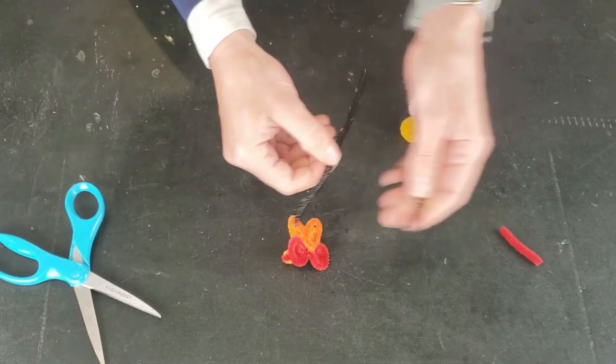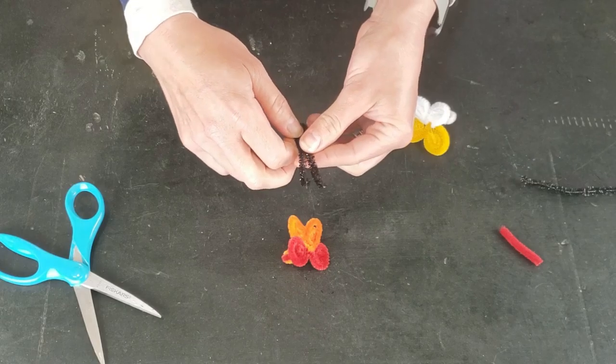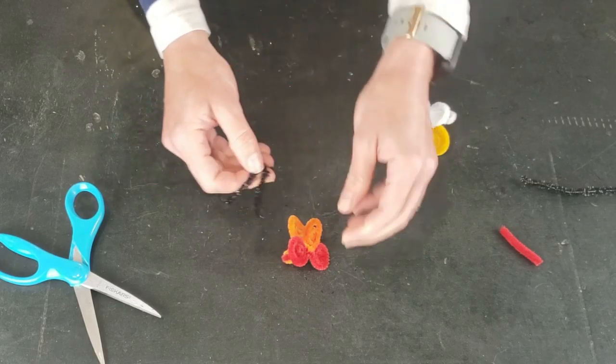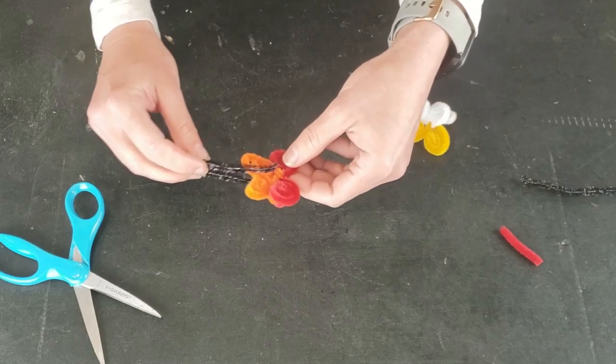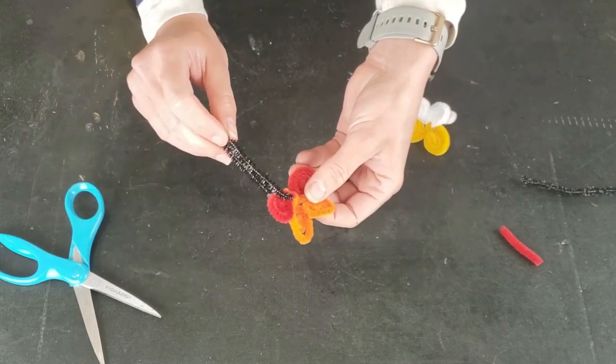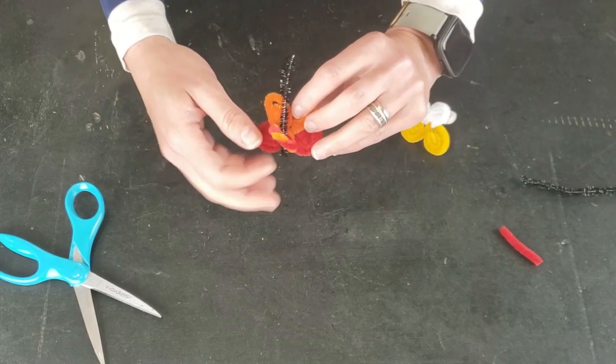So then to create the center, you just need to make a shorter pipe cleaner out of the neutral one, so we only need a half. So just fold the neutral colored pipe cleaner in half and then cut that off. And then we'll fold it in half again so we can find the center.